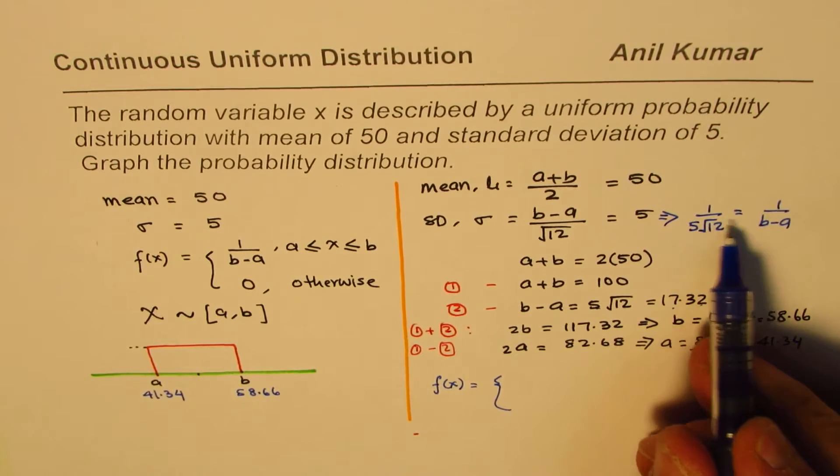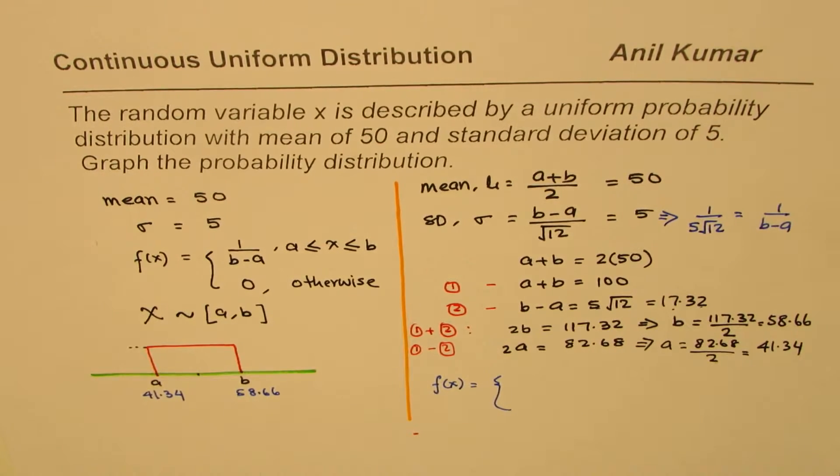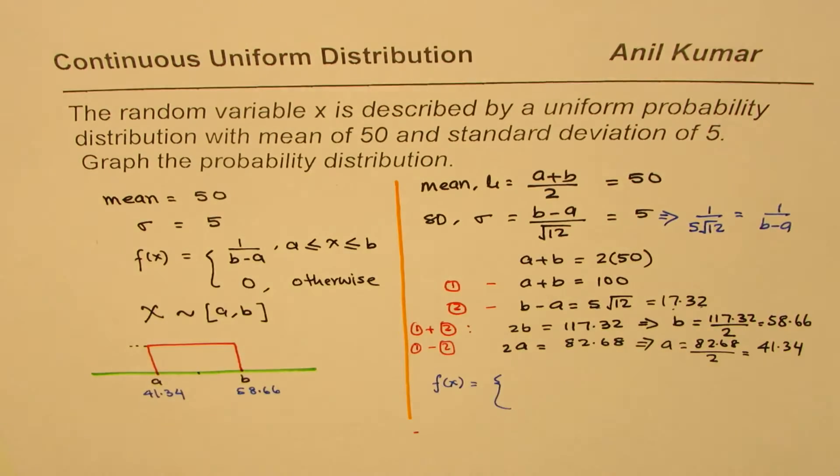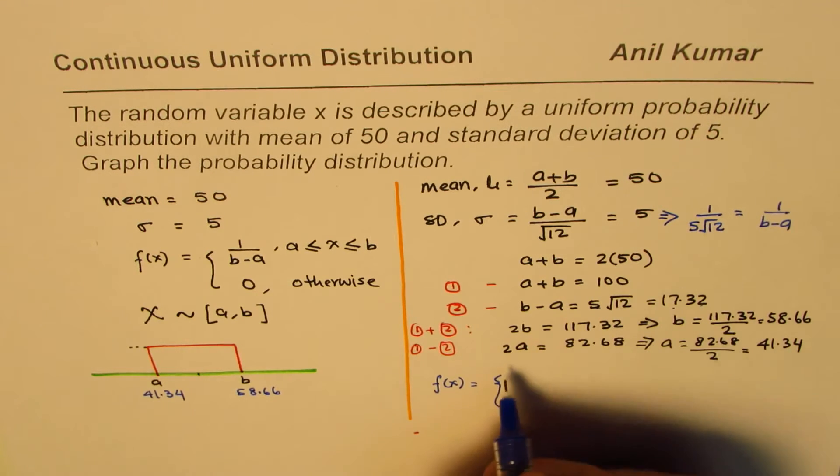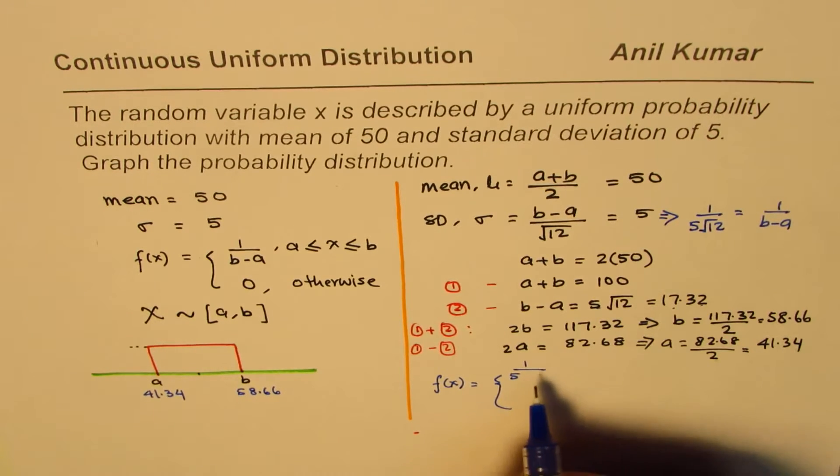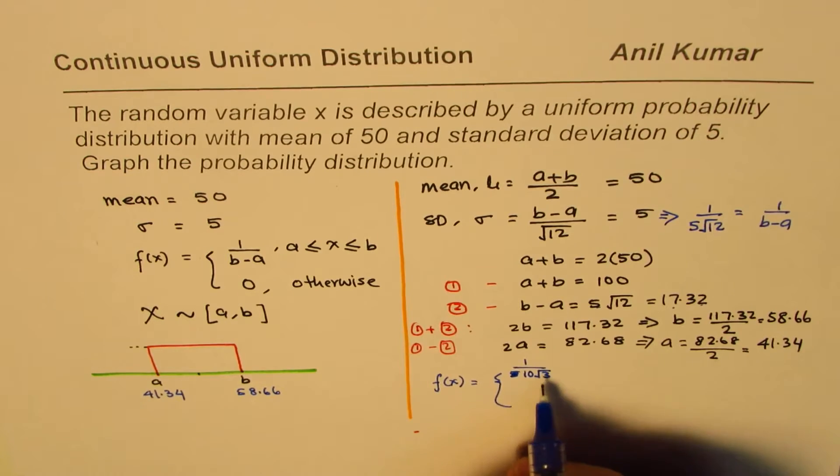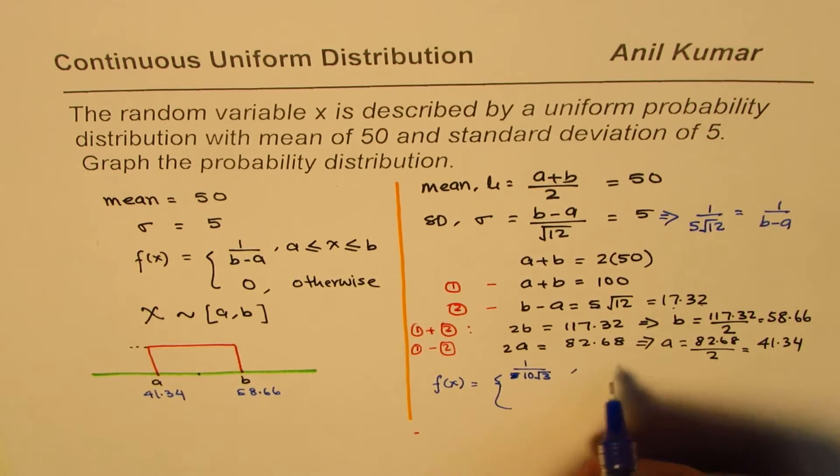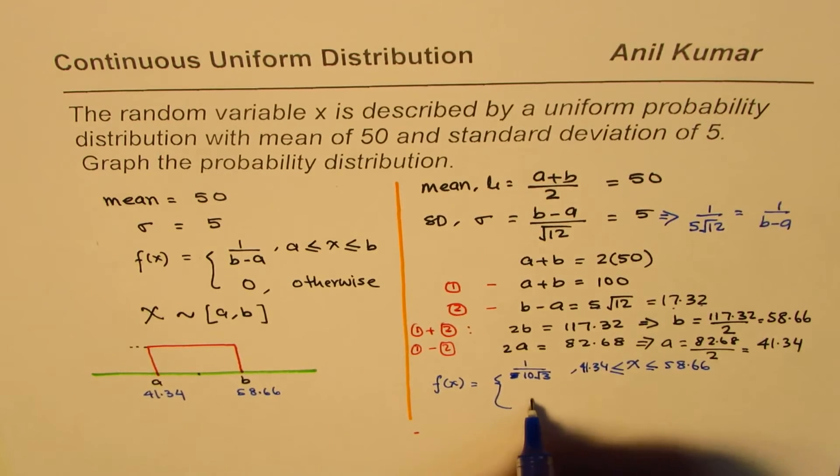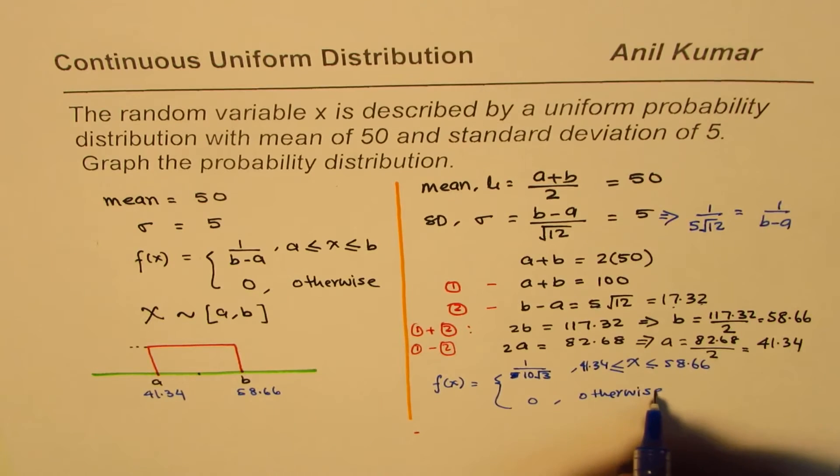So that is what 1 over b minus a is, 1 over 5 square root 12. So it gives you, we'll use 1 over 5 square root 12. Actually, square root 12 is 4 times 3, so 2, 10 square root 3. So it's better to write 10 square root 3 here, rather than 5 square root 12. This is when the random variable x is between 41.34 and 58.66, and it's equal to 0 otherwise.